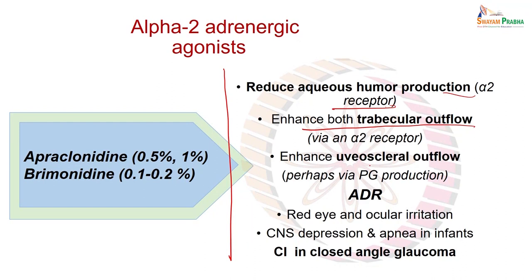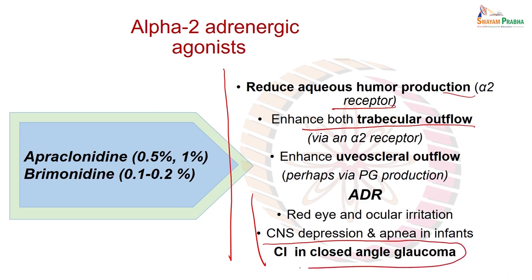Alpha-2 adrenergic agonists have a dual mechanism of reducing secretion and increasing outflow, and enhance uveoscleral outflow via prostaglandin production. Adverse drug reactions include red eye and ocular irritation, CNS depression, and apnea in infants. This class is contraindicated in closed-angle glaucoma as it can further precipitate the condition.